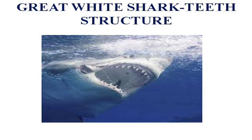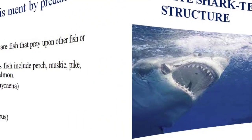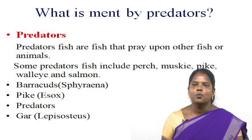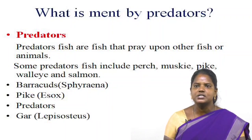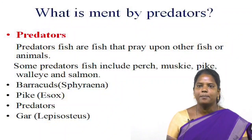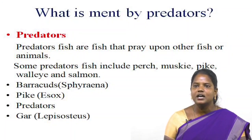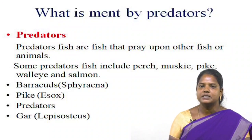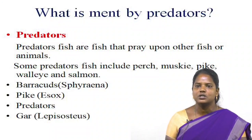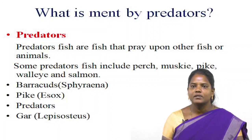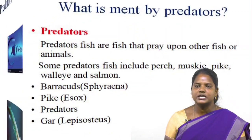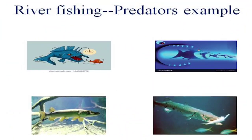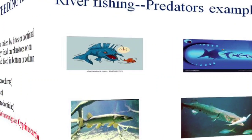What is meant by predators? Predators means fishes that prey upon other fish or other animals. Some predatory fishes include perch, muskie, pike, walleye, and salmon. Other examples are barracuda, pike, and Lepisosteus. These are examples of river and marine predatory fishes.